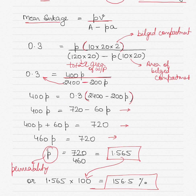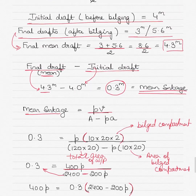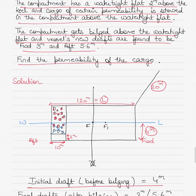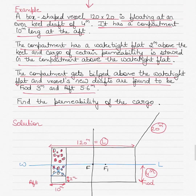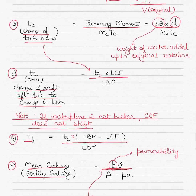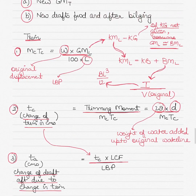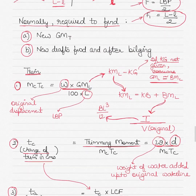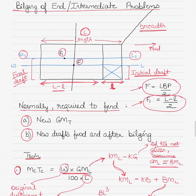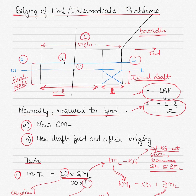This is how some of the numericals are presented or designed for students in the exam regarding bilging of end compartments. I'll take up some more examples in future and show you how the different numericals are worked out. Hopefully you will have a good understanding of this topic by then. Let me know if you have any questions through your comments and I'll be trying my best to answer them all.